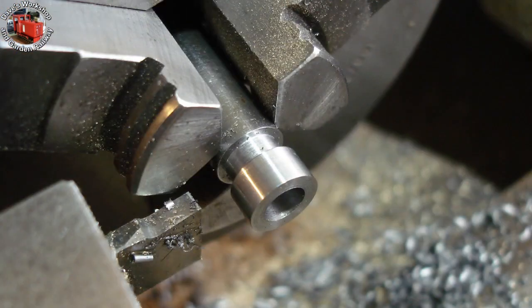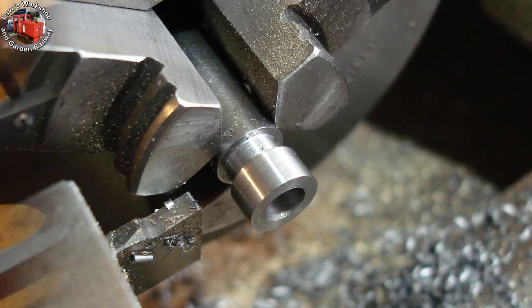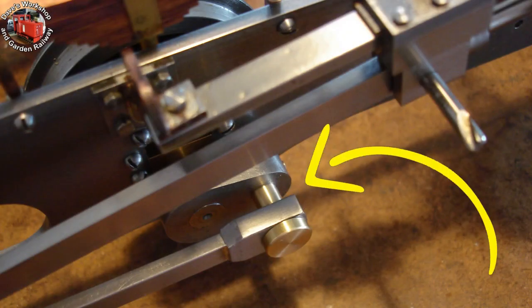Two steel spacers from 3/8ths bar, 3/16ths wide for the front axles. This is the gap for the spacer.